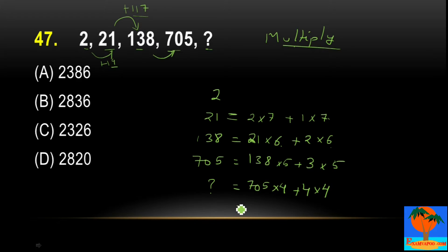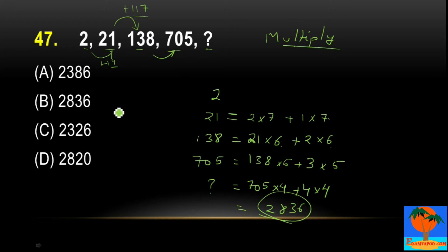When you multiply 705 by 4 and add 4 times 4, you get 2820 + 16 = 2836. So the correct answer is 2836, which is option B.